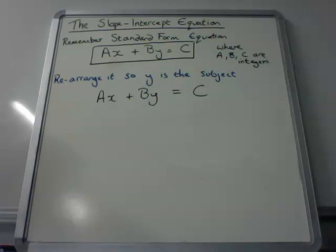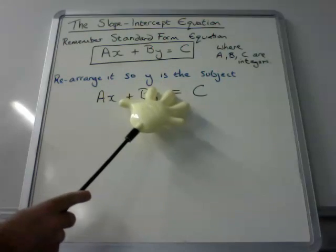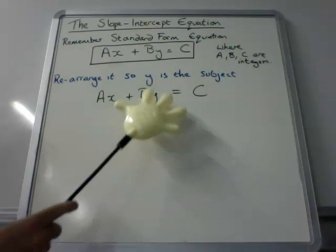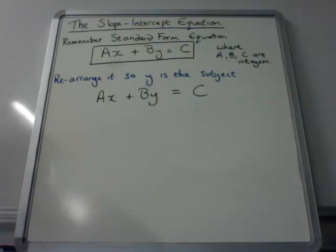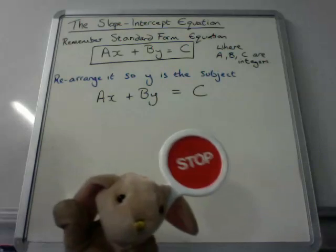But what I'm going to do is rearrange it so that y becomes the subject. That means I need to get rid of everything on this side, except the y. So the equation reads y equals with everything on the other side. So you're supposed to have this skill already. So I want you to stop the video and see if you can rearrange the equation and make y the subject now.